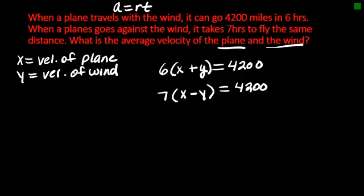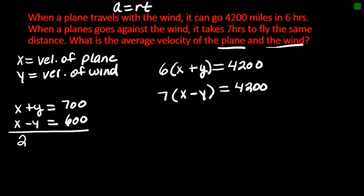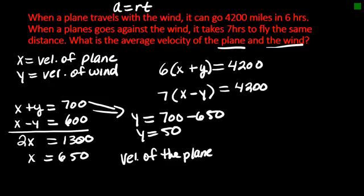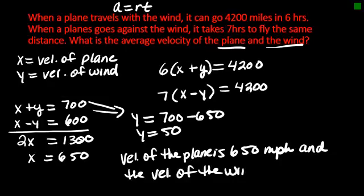We can rewrite this system as x plus y equals 700, if I divide both sides by 6. And x minus y equals 600, if I divide both sides by 7. This is set up for addition: 2x equals 1300, so x is 650. If x is 650, then y is 700 minus 650, so y is 50. The velocity of the plane is 650 miles per hour and the velocity of the wind is 50 miles per hour.